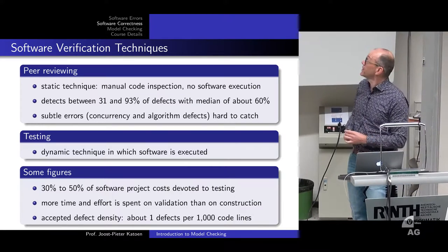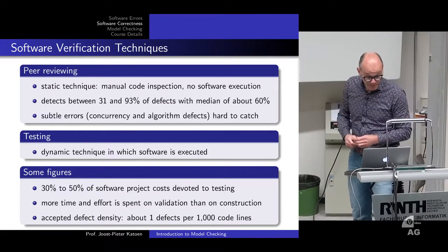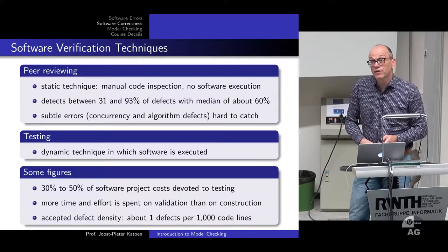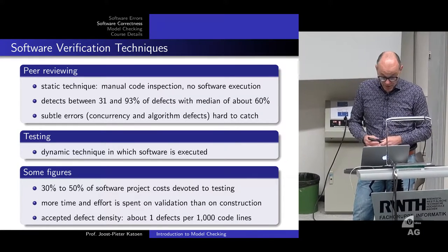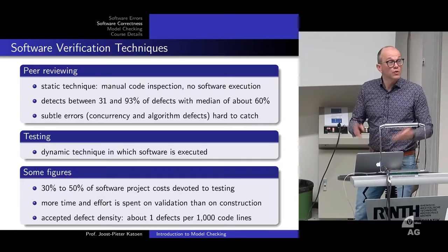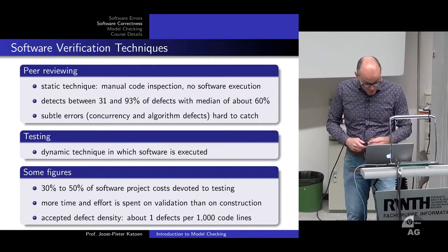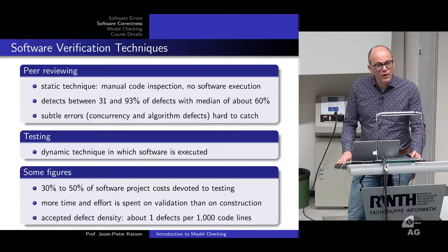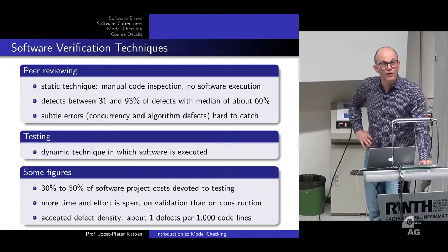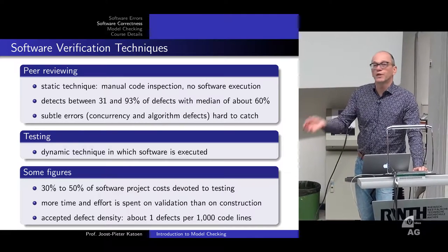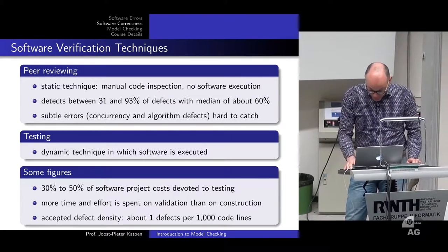About 30 to 50 percent of software project cost is devoted to testing — more time and effort is spent checking whether you're doing the right thing than on constructing. The defect density figure from Microsoft at the time of Windows 95 was: the software is okay if we have about one defect per 1,000 lines of real code (without documentation comments).